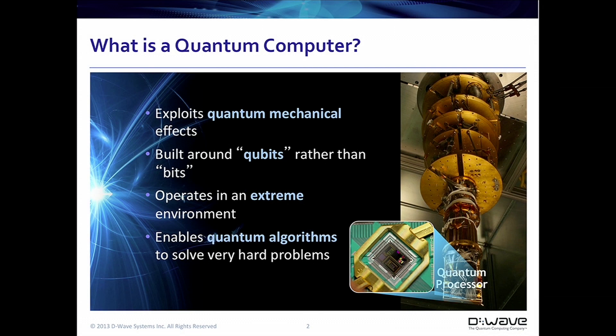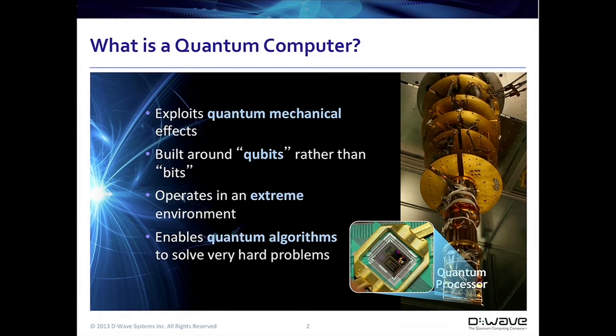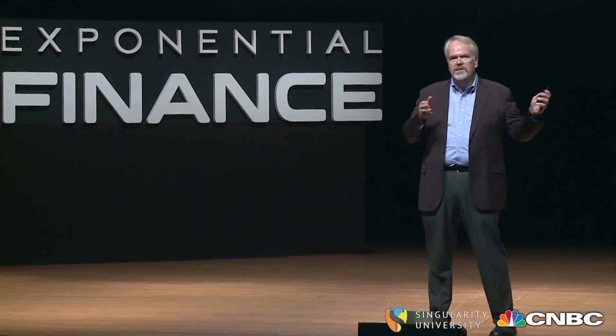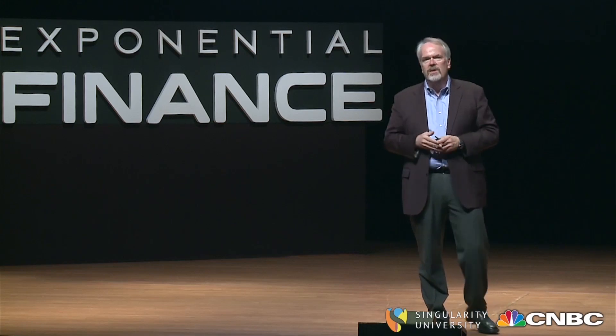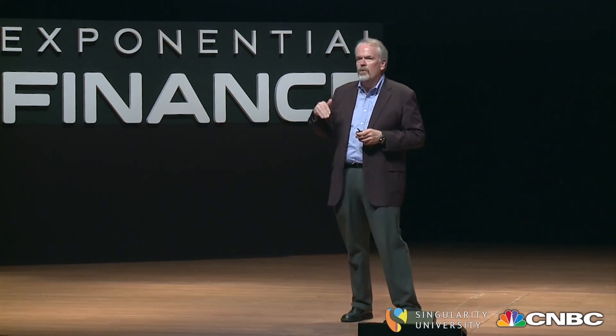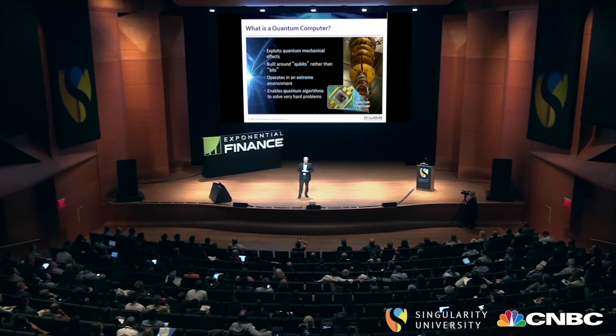The challenge to building a quantum computer is that they operate in very extreme environments. The enemy of quantum computing is noise — temperature, electromagnetic interference, and things like that cause quantum computation not to work. So you have to build a very extreme environment to capture the quantum computation. It enables a whole different way of looking at problems, a whole different kind of software algorithms, and a tool usable in ways that classical computing — everything from John von Neumann in 1948 to now — cannot provide.